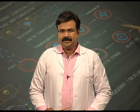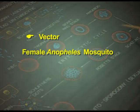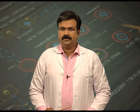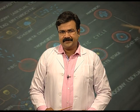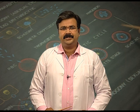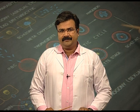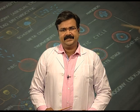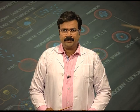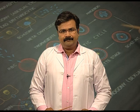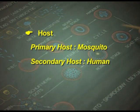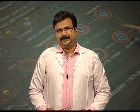The vector in this case is the Anopheles mosquito, which is also serving here as primary host, because if we talk about the life cycle part, the sexual life cycle takes place inside the mosquito. If mosquito is the primary host, man is the secondary host, because in man the asexual cycle takes place.